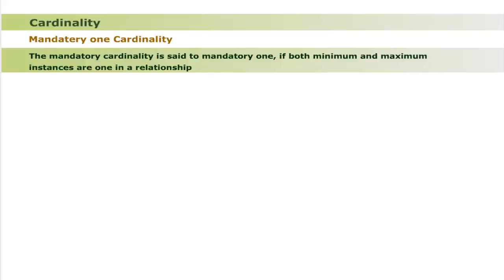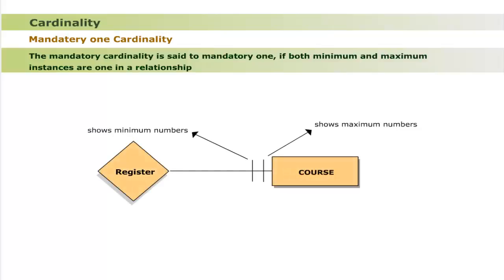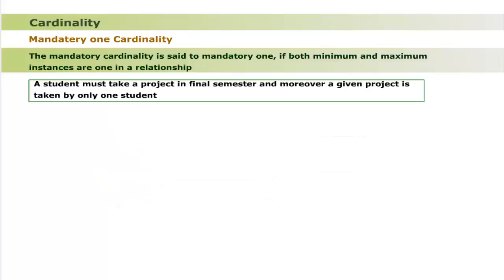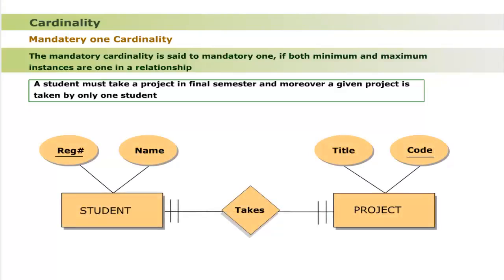Mandatory one cardinality means both minimum and maximum instances are one in a relationship. For example, consider that a student must take a project in the final semester and a given project is taken by only one student. The cardinality of entity class Student is mandatory one, as the minimum and maximum value of a student is one in the relationship 'takes'. Similarly, the cardinality of entity class Project is mandatory one, as the minimum and maximum value of a project is one.